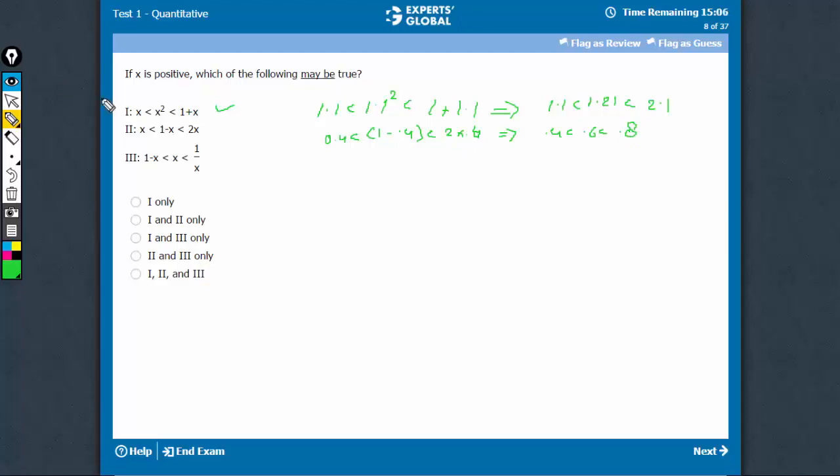This is a difficult question. This is also possible. Such values are possible for values of x which are less than 1 but closer to 1, for example 0.9. 1 minus 0.9 is less than 0.9 is less than 1 upon 0.9. This is 0.1 less than 0.9 less than 1.11.